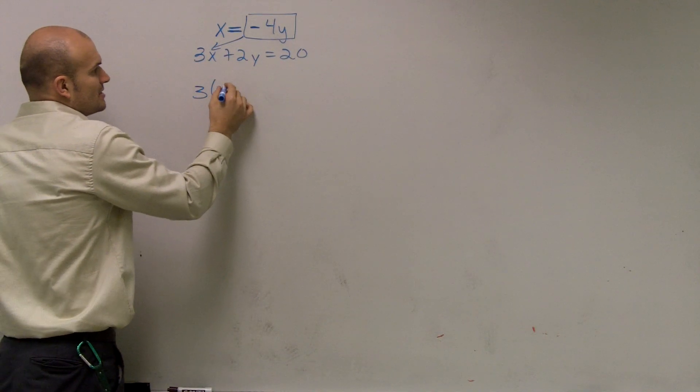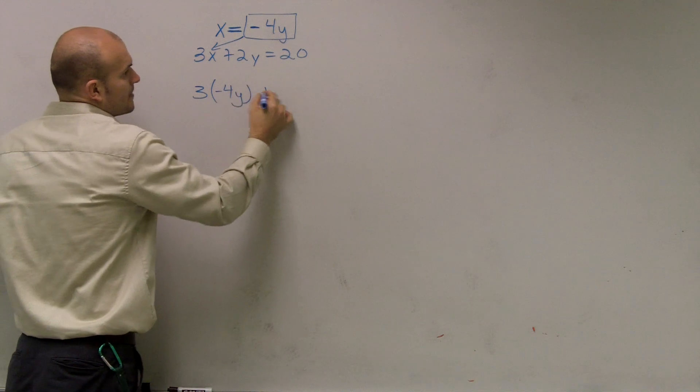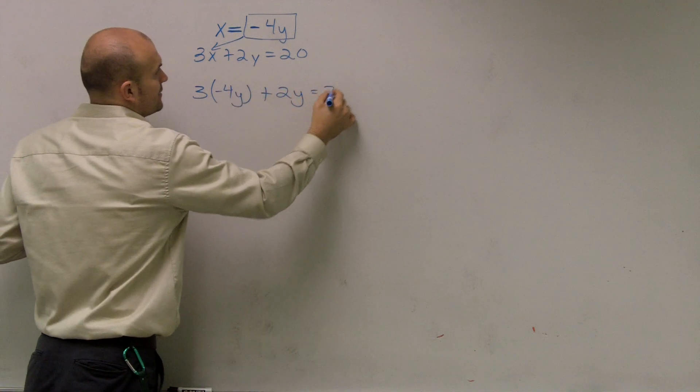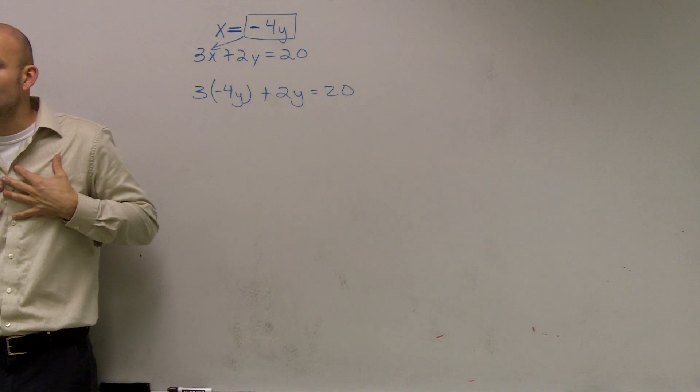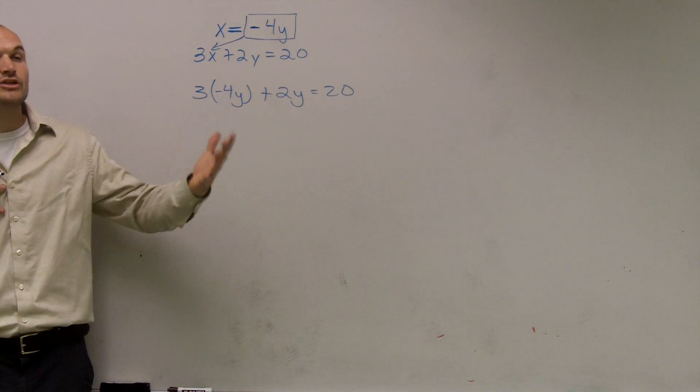I'll have 3 times negative 4y plus 2y equals 20. It's very important to put it around parentheses, so I will notice that that's what you did. And then you will see it.